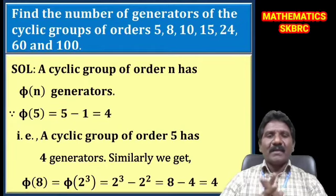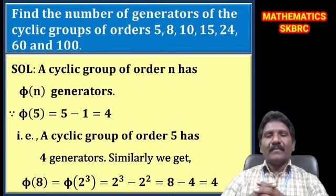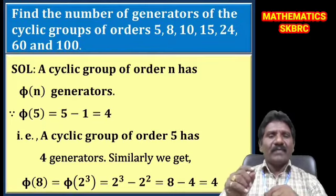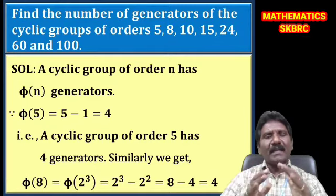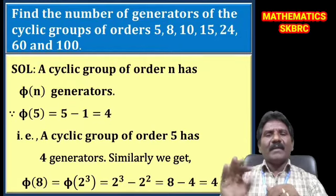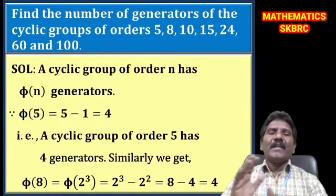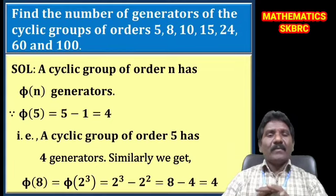Example problem: Find the number of generators of cyclic groups of orders 5, 8, 10, 15, 24, 60, and 100. A cyclic group of order n has φ(n) generators. Since 5 is a prime number, φ(5) = 5 − 1 = 4. So a cyclic group of order 5 has 4 generators.